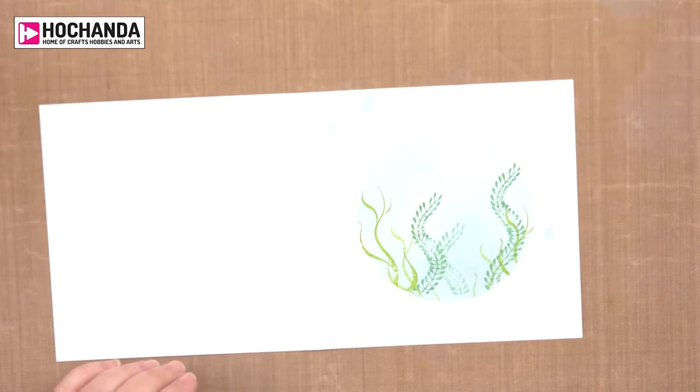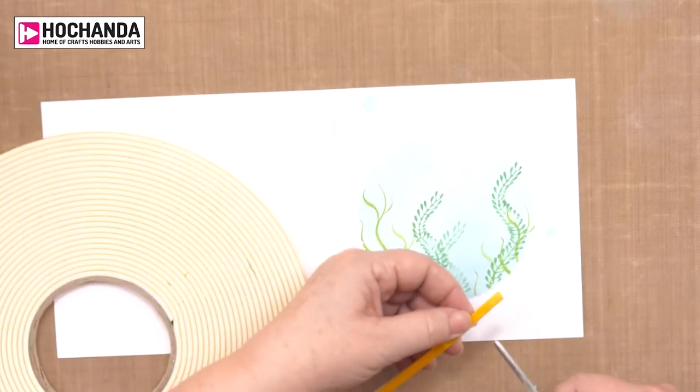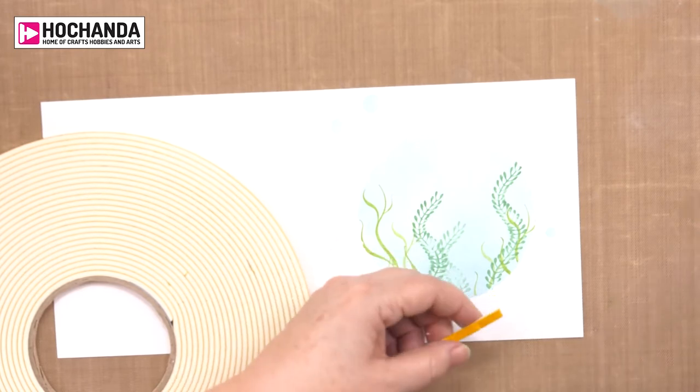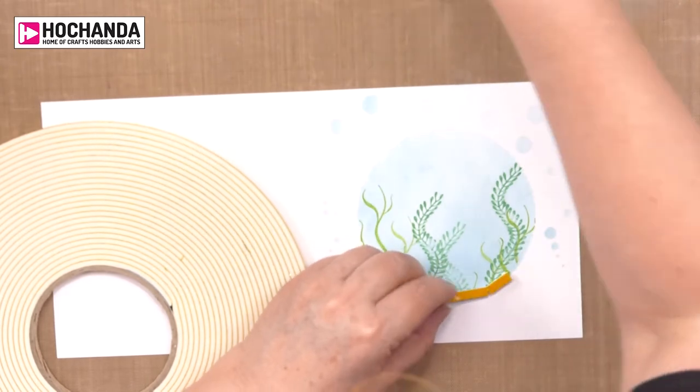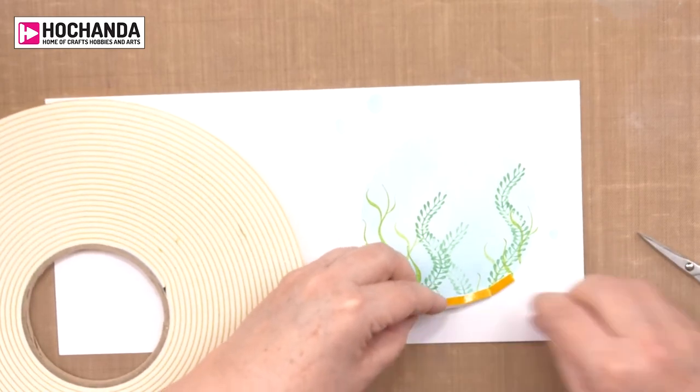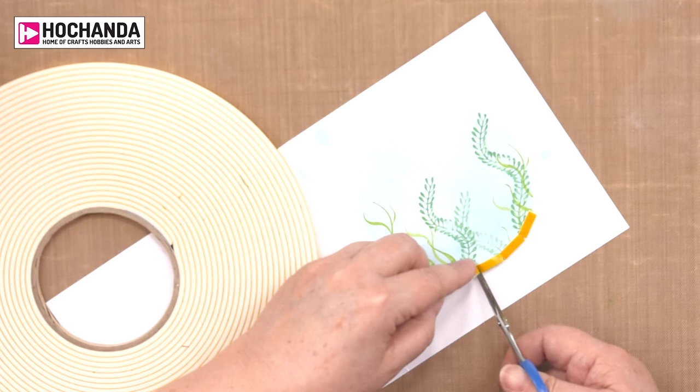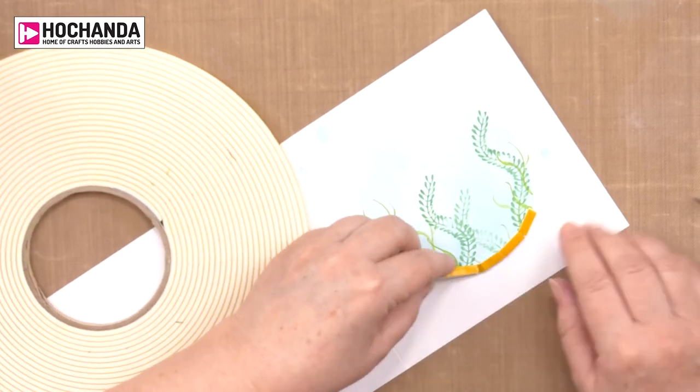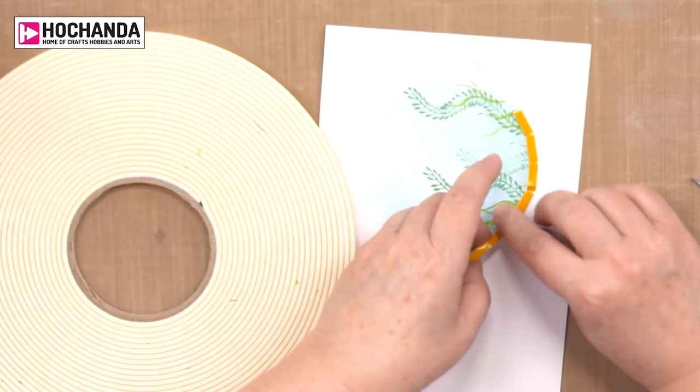To create the shaker section you need foam tape, and it's in a circle so that makes it slightly trickier. What I've discovered is if I just snip every centimeter maybe. We're going to do little snips as we go around, but you don't want to snip all the way through because we need to create a barrier that stops everything from escaping.